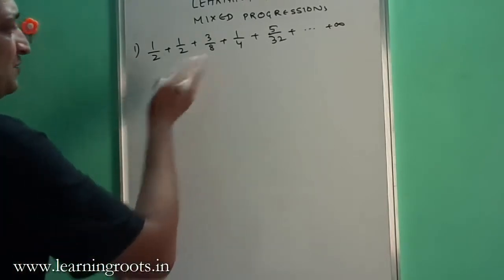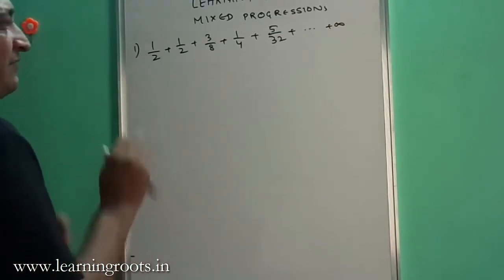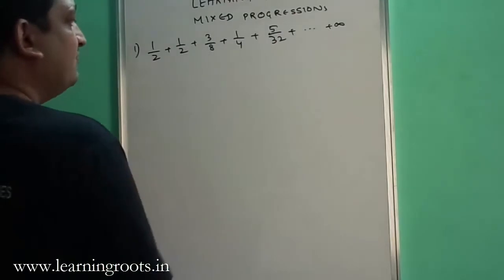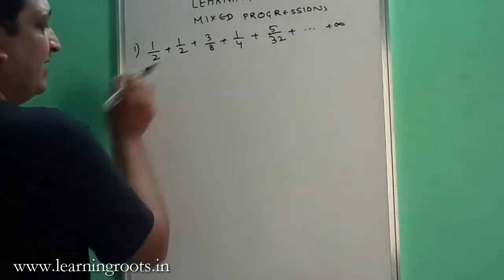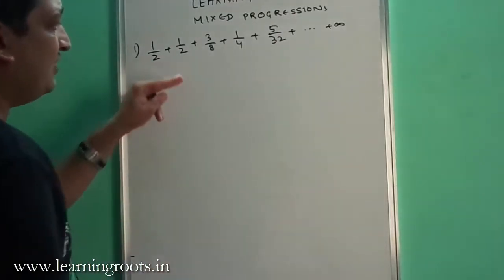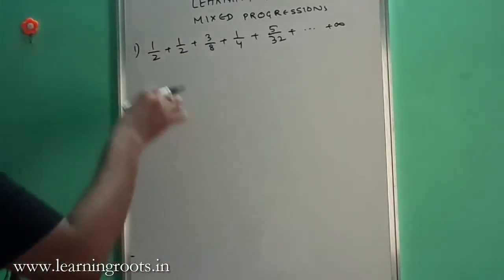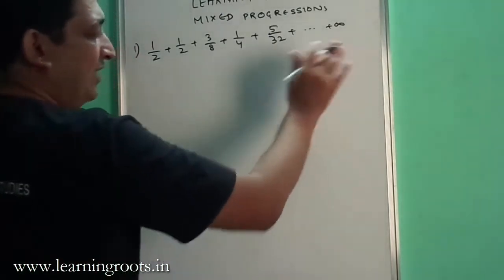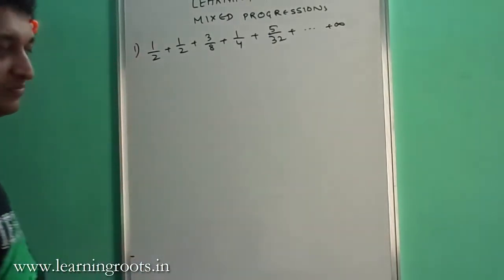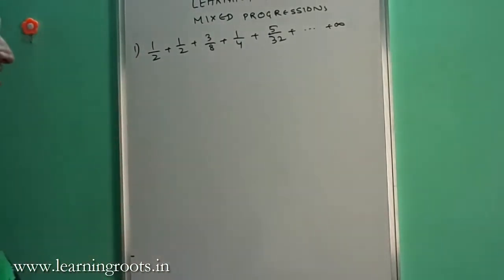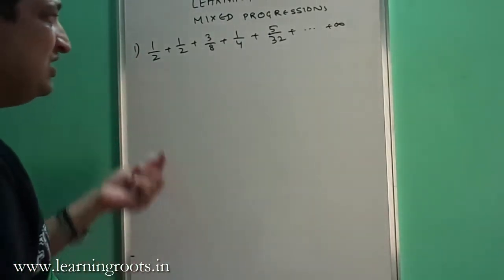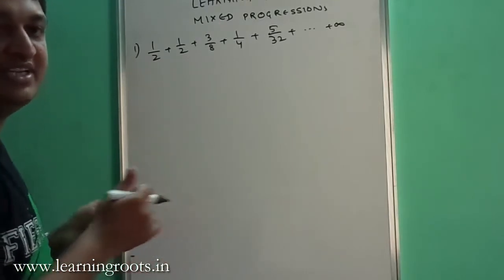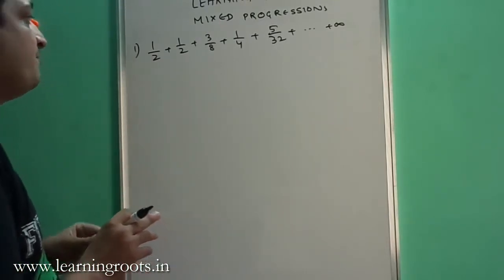Say for example there is this problem which says we have to find the sum of all these terms: 1/2 plus 1/2 plus 3/8 plus 1/4 plus 5/32 and so on. How will you find the sum of this? You can pause the video and try something on your own, and then maybe we can check how to go about it.